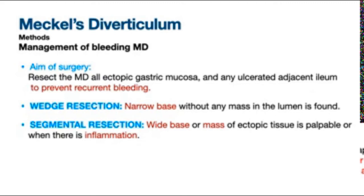The aim of surgical resection in bleeding Meckel's diverticulum is to excise all ectopic gastric tissue and any ulcerated adjacent ileum, to prevent recurrent episodes of bleeding. Wedge resection is preferred when a narrow base with no masses is found, while segmental resection is preferred when there is a wide base, a palpable mass, or signs of inflammation.